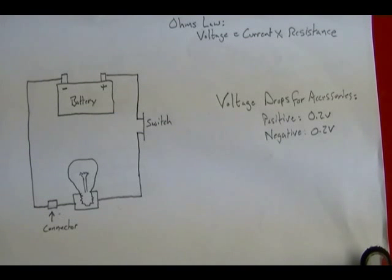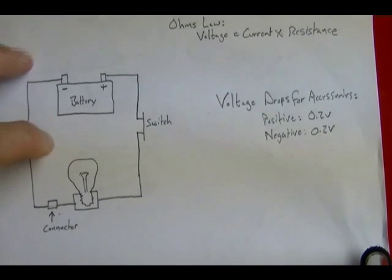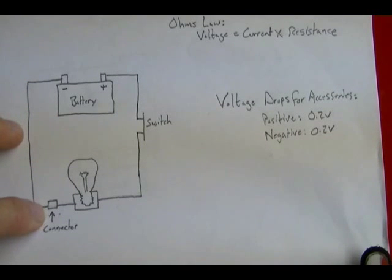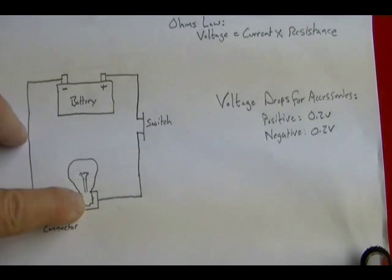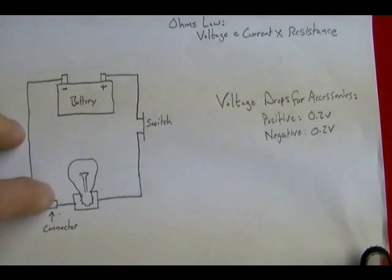When that happens, it robs voltage or power from the circuit. For example, in this simple light circuit, if this connector was bad, it would drop more voltage across this connector than normal. What it's doing is taking that voltage that would normally be across the light bulb and consuming that power in the connector instead. The result would be that the light bulb would glow dimmer than normal.